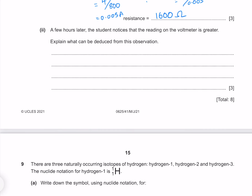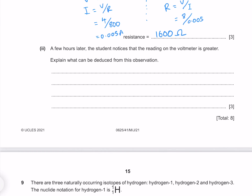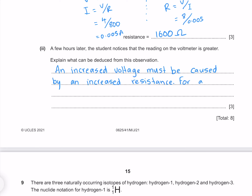A few hours later the student notices that the reading on the voltmeter is greater. Explain what can be deduced from this observation. A greater reading on the voltmeter means greater voltage drop across the thermistor, and therefore a greater resistance. For an NTC (negative temperature coefficient) thermistor, a greater resistance means the temperature must have decreased.